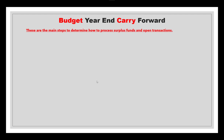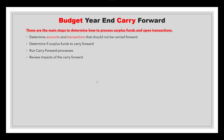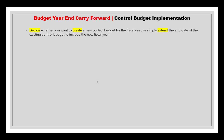There are key steps to determine how to process surplus funds and open transactions: determine which accounts and transactions should or should not be carried forward, determine if surplus funds should be carried forward, run the carry forward processes, and review the results using the review option. Also process encumbrance balances — applicable only if using encumbrance accounting. Decide whether to create a new control budget for the fiscal year or simply extend the end date of the existing control budget to include the new fiscal year.